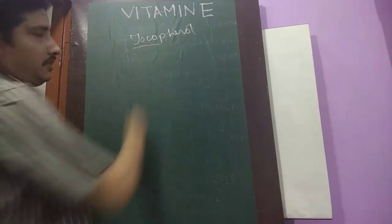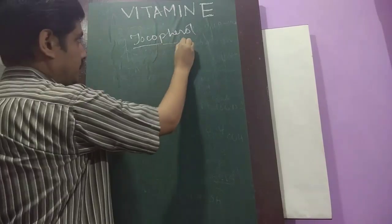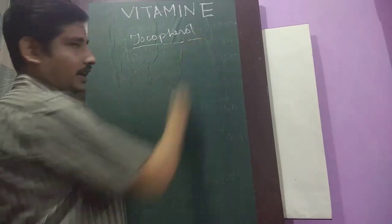This tocopherol comes from childbirth, pherol comes from bear, and -ol is for alcohol.